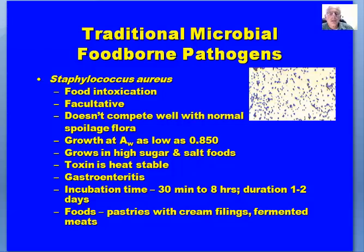S. aureus likes high sugar and high salt foods. The toxin in this case is heat stable — recooking or reheating the food will not destroy it. It causes gastroenteritis. The incubation time can be very quick, from 30 minutes to eight hours depending on the amount of toxin present, and the duration is one to two hours. Foods associated include pastries with cream fillings, fermented meats, and ham — which has been one of the major places S. aureus has been found.